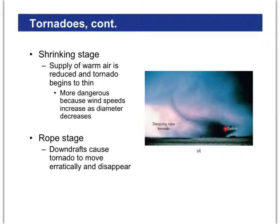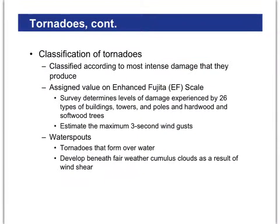As the tornado gets skinnier, it actually rotates faster — like figure skaters who pull their arms in to spin faster. So as the tornado gets skinnier, it rotates faster.